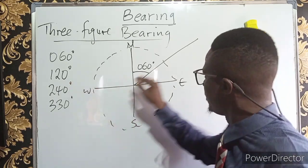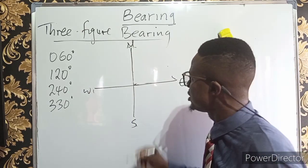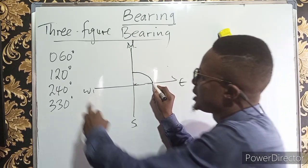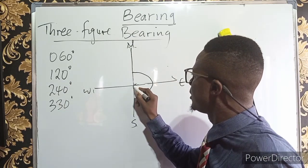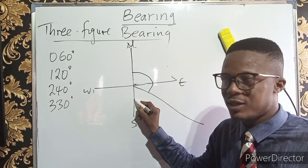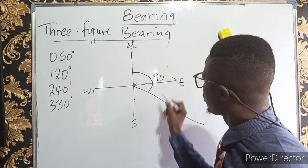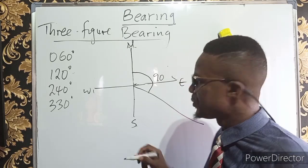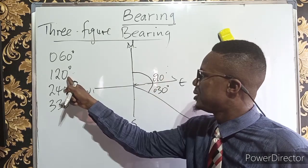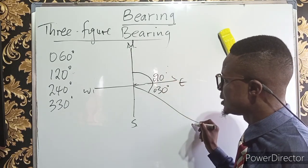For 120 degrees, I begin from the north and turn clockwise. Touching the east line gives 90 degrees, but 90 is not yet 120, so I turn a bit further. Touching the south line would be 180 degrees, which is more than 120. So I ask: what do I add to 90 to get 120? The answer is 30 degrees. So 120 degrees is 30 degrees past the east line, meaning this angle of 30 degrees puts it in the second quadrant.